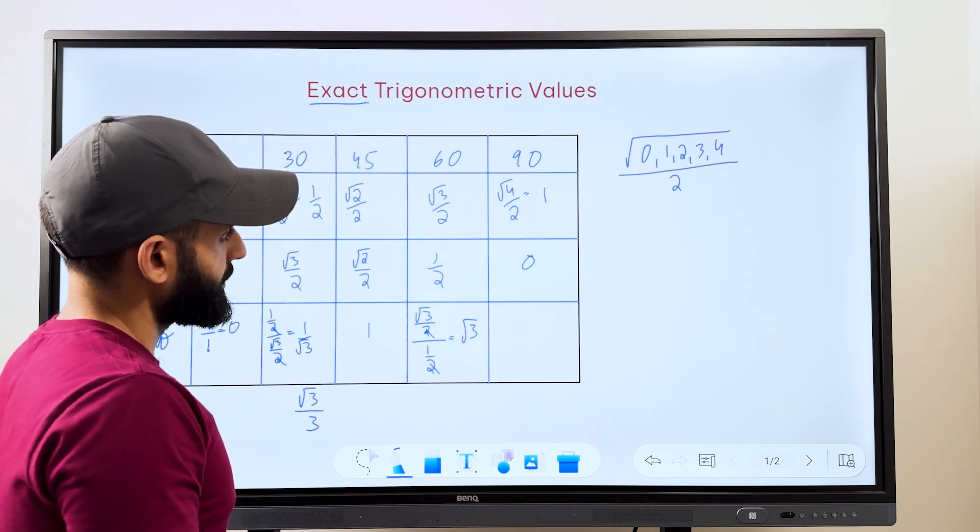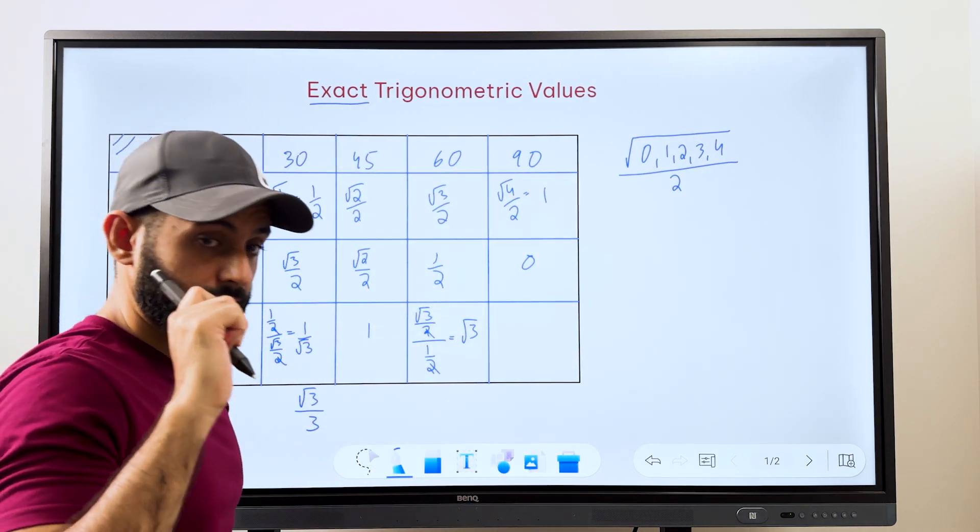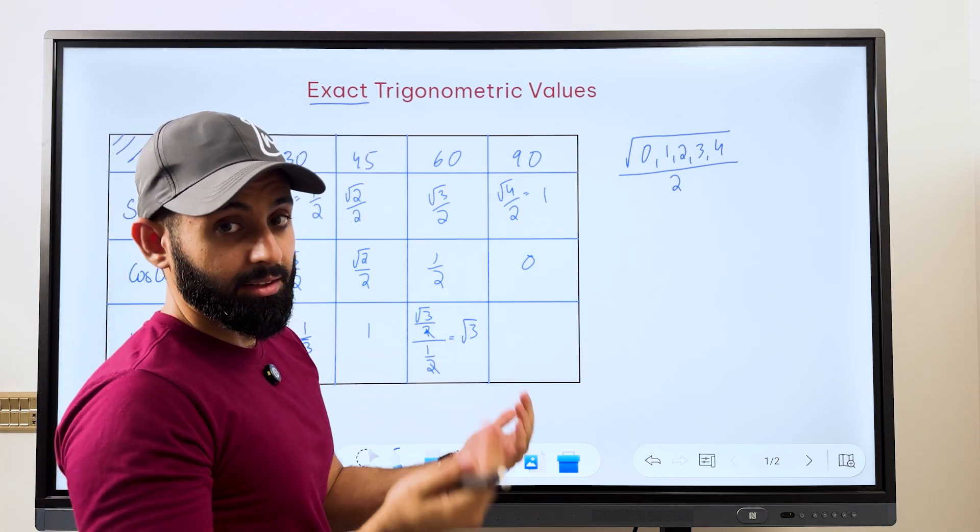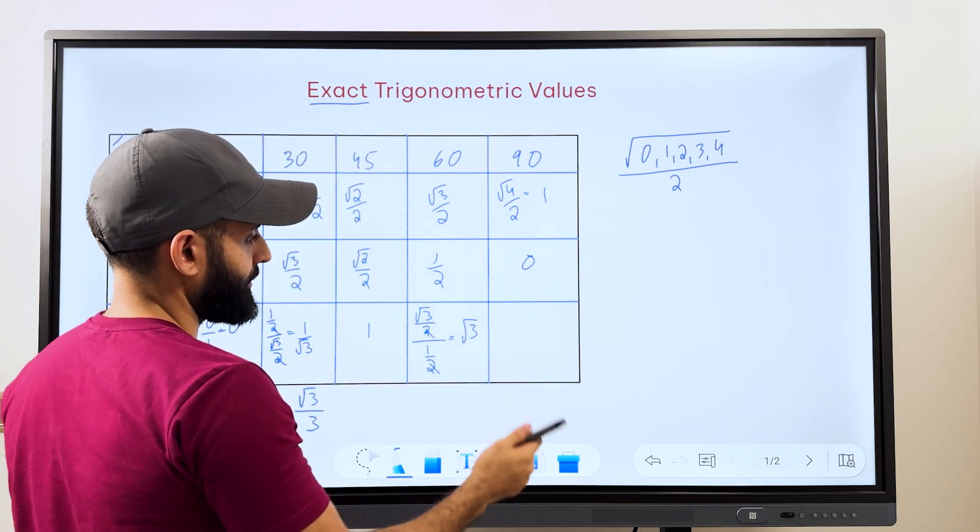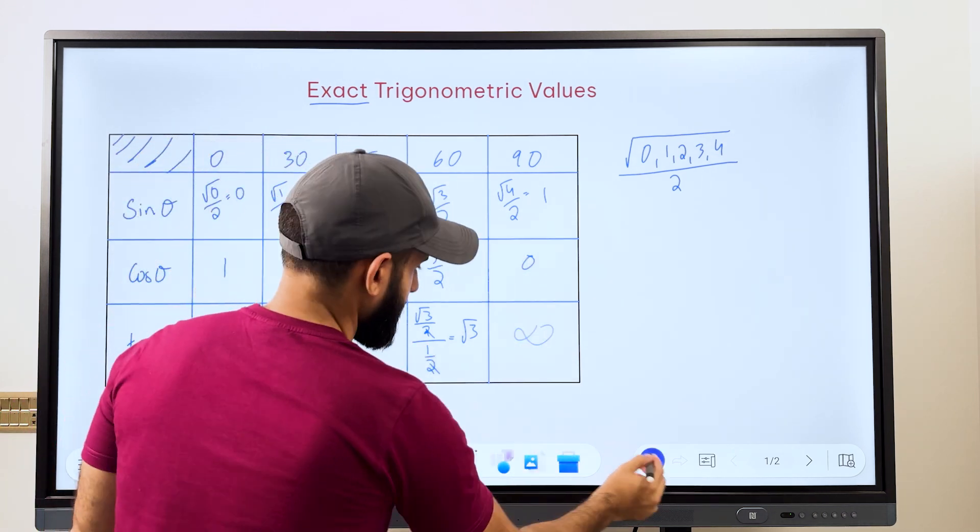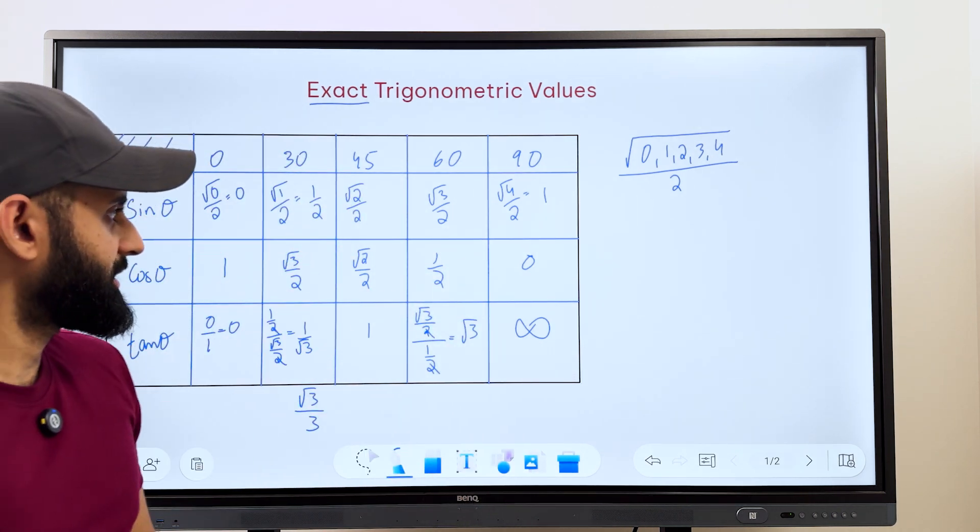Then for tan 90, what do we do for that? For tan 90, we do 1 divided by 0. Now what's 1 divided by 0? Not 0, if that's what you were thinking. In fact, anything divided by 0 is infinity. Your calculator gives you a math error, which basically means infinity. So here we say infinity. I think I can do a better job with that. Yeah, there you go.